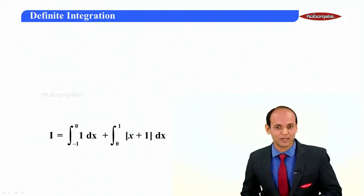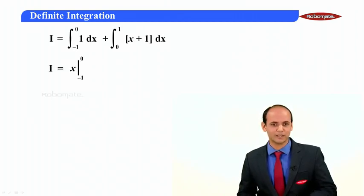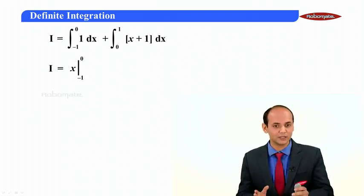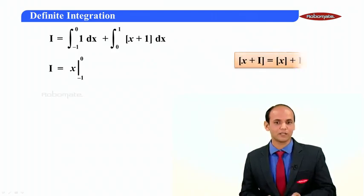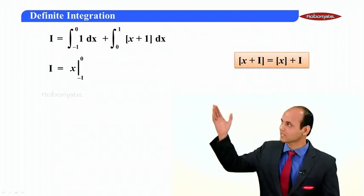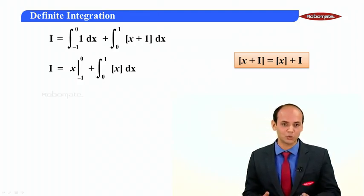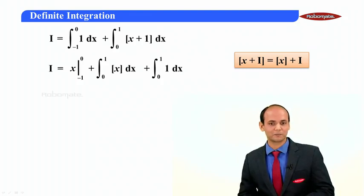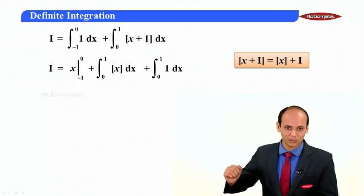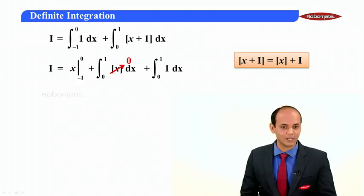For the first integral, integrating 1 gives x evaluated from minus 1 to 0. For the second integral, recall the property that ⌊x + n⌋ = ⌊x⌋ + n for integer n. Here ⌊x + 1⌋ = ⌊x⌋ + 1, and since limits are from 0 to 1, ⌊x⌋ = 0 throughout. Hence the second integral becomes 0.